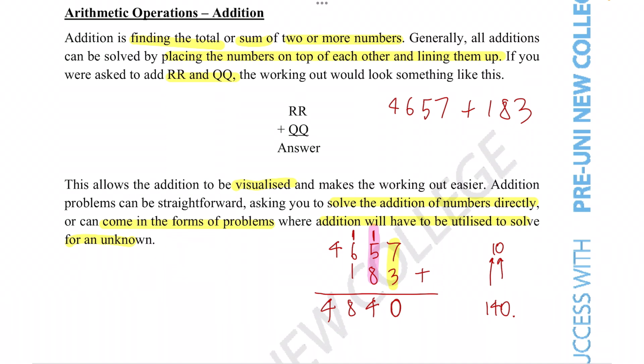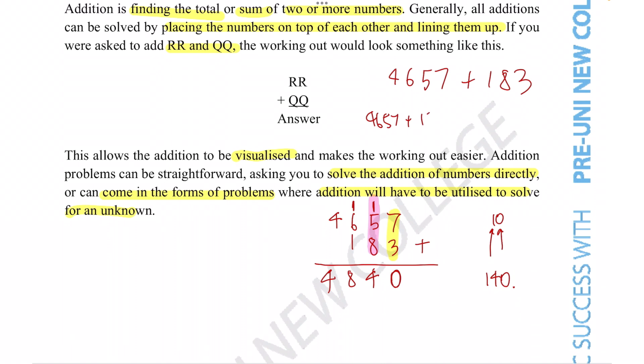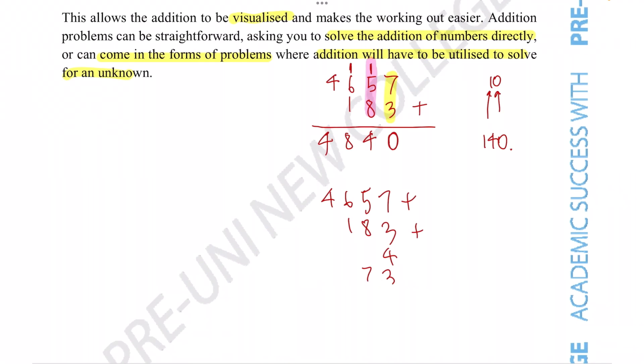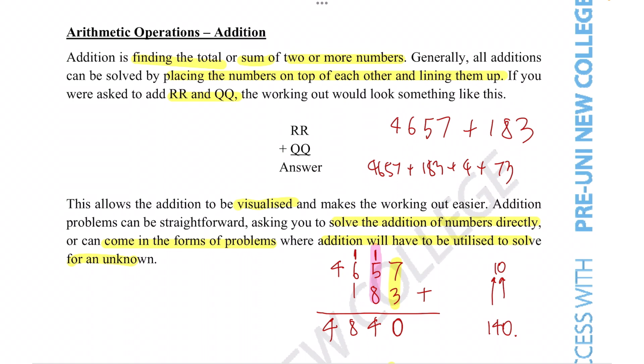We can actually do that for any number of additions. It doesn't matter how many numbers you're adding. For example, if you wanted to find 4657 plus 183 plus 4 plus 73, you can do the addition the exact same way. Just make sure you align the numbers 183 plus 4 plus 73, and you would do it the exact same way. You simply align the columns and do the addition and see what number you get, and that is the result of the calculation. I won't go through the actual calculation because the steps are exactly the same, but it goes to show how you can use this simple technique to add even the most complicated of numbers. Just make sure that your columns are properly aligned and you'll probably never have any issues.